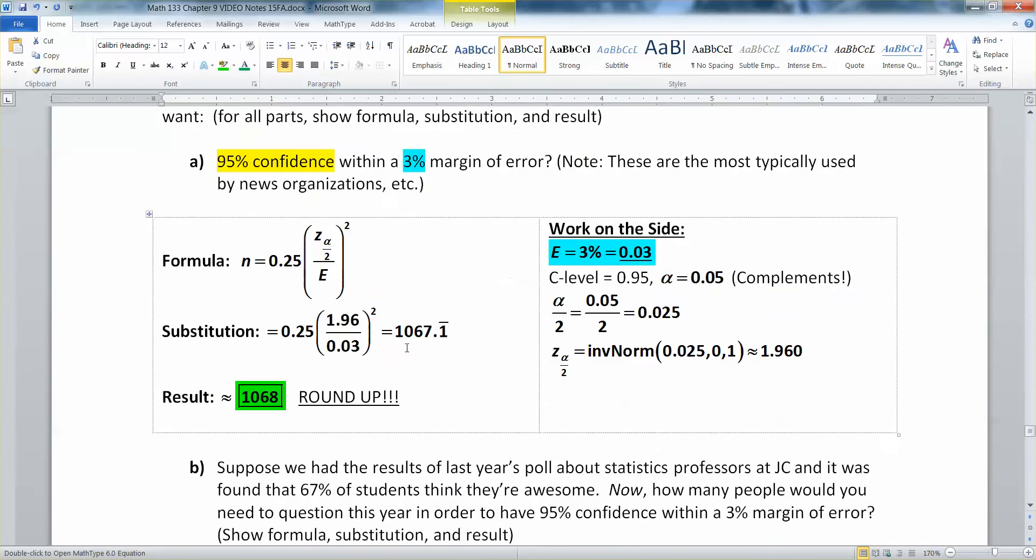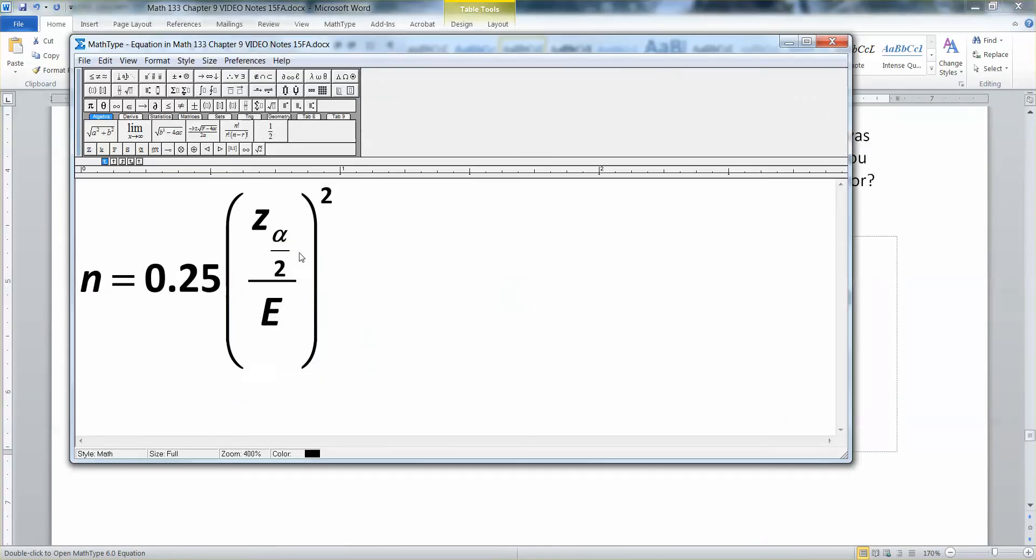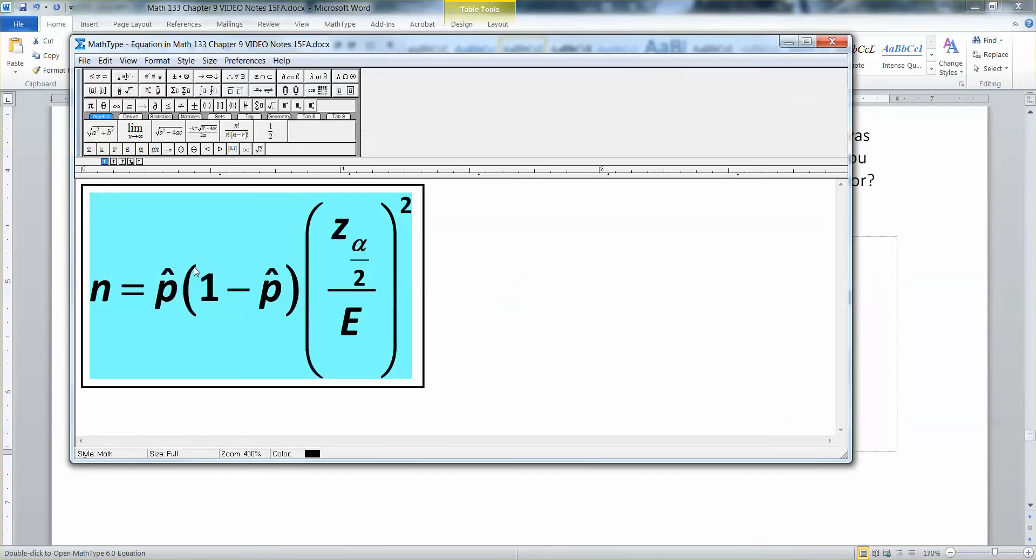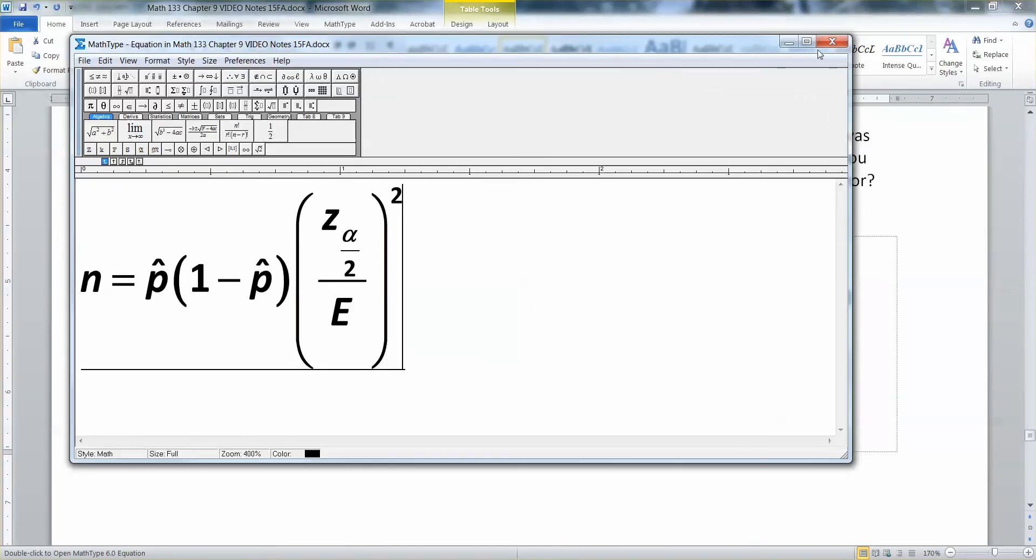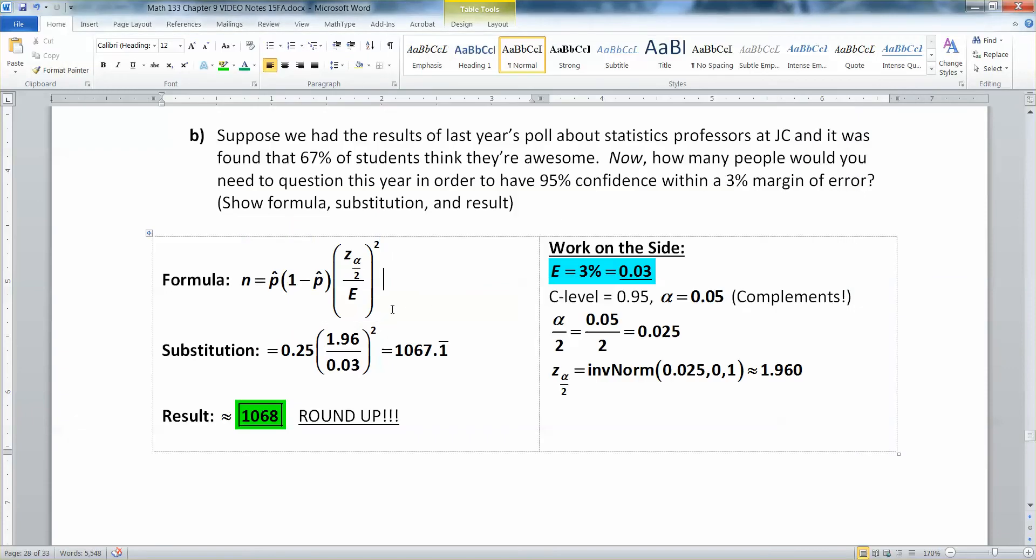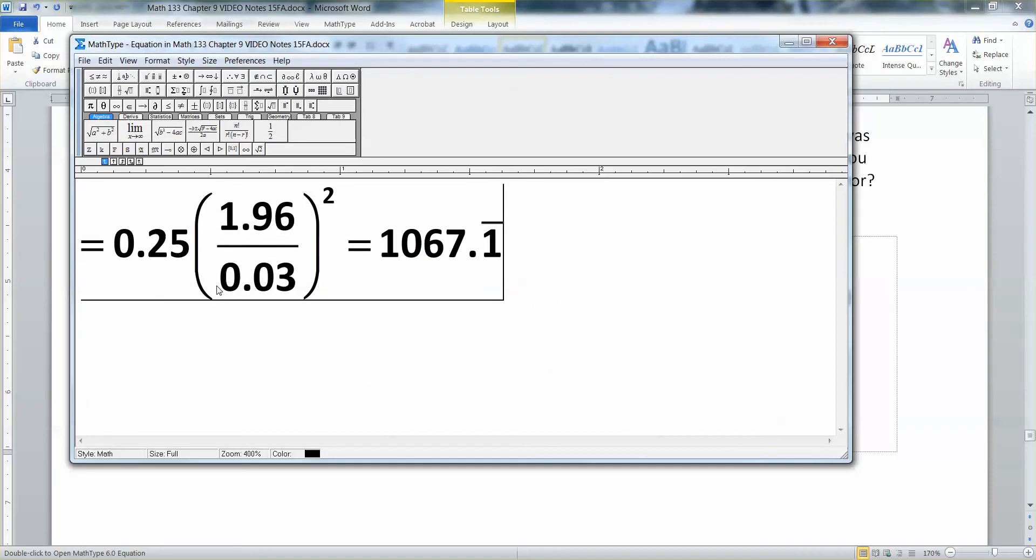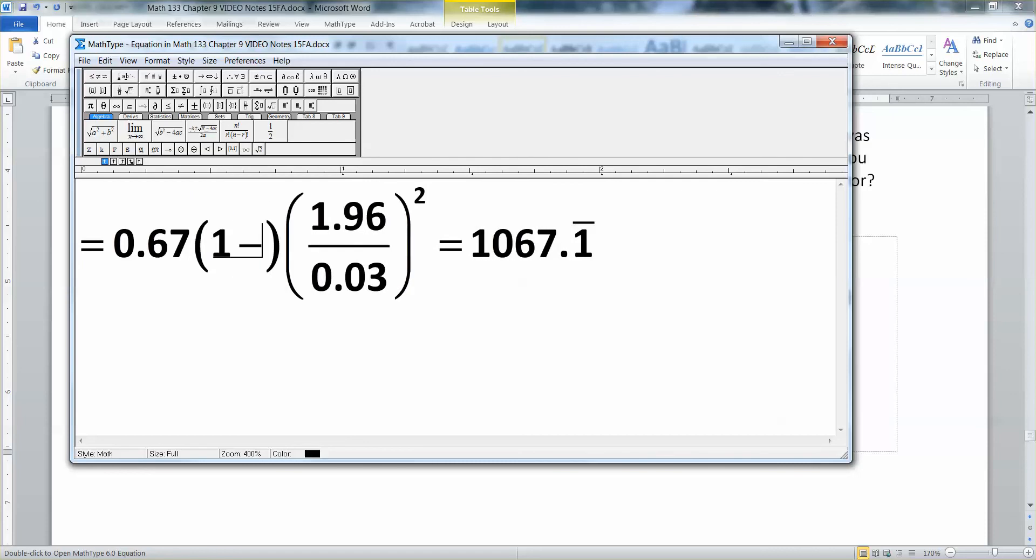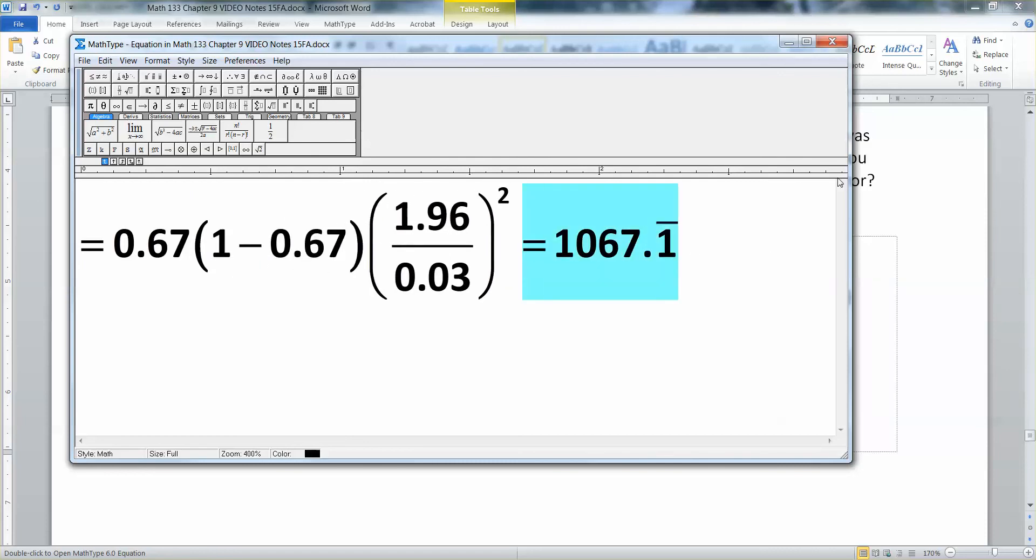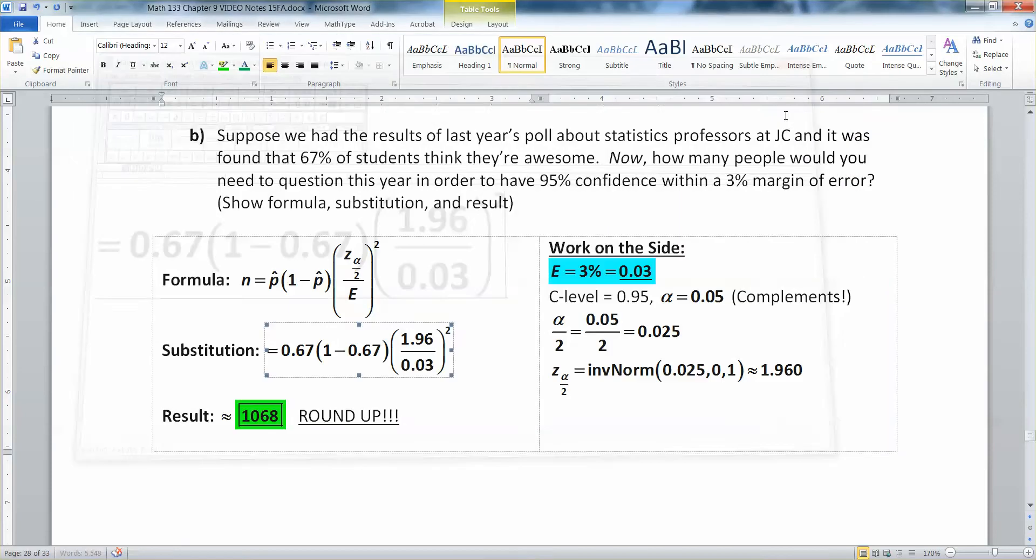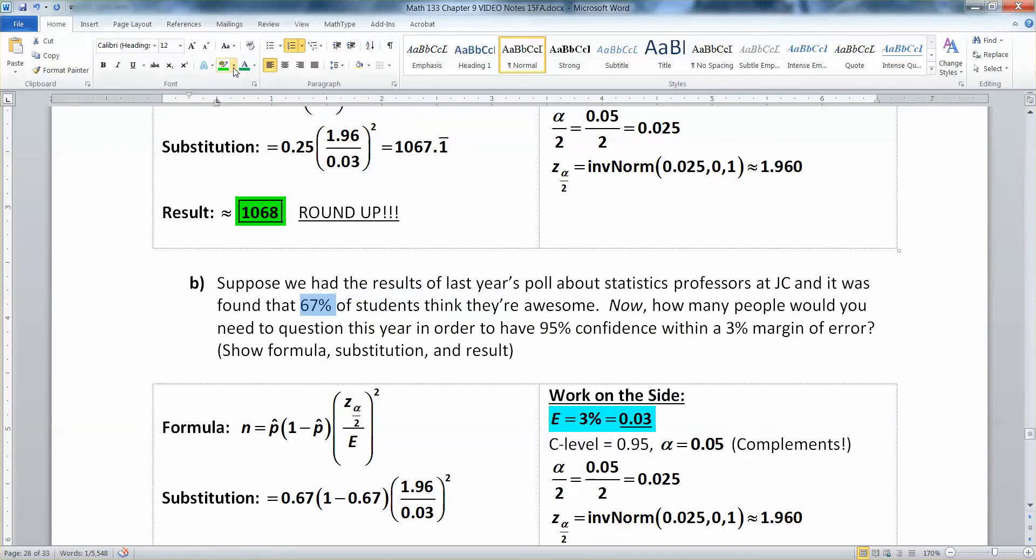But what is changing is the formula we're using. We now get to use the one I was trying to use before, which is the p-hat one. So we have p-hat times 1 minus p-hat over error squared, or times z over the error squared. Well, the 1.96 and the 0.03 isn't changing. What is changing is p-hat. You actually have a p-hat estimate of 0.67 times 1 minus 0.67.